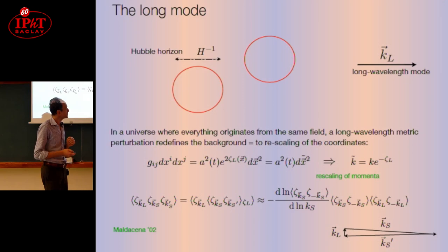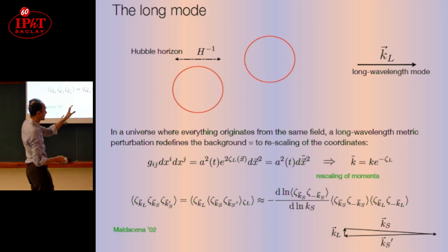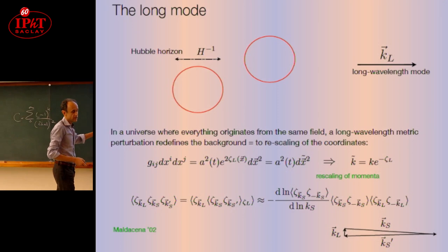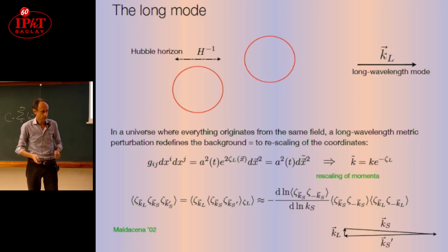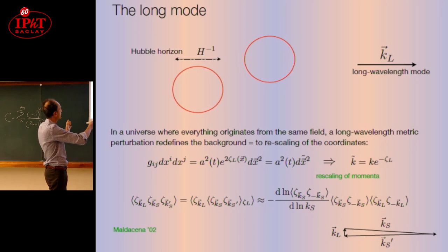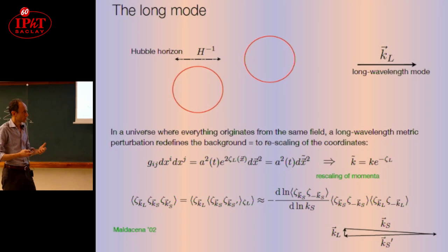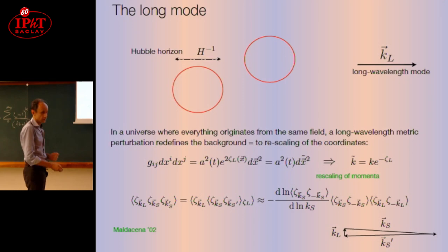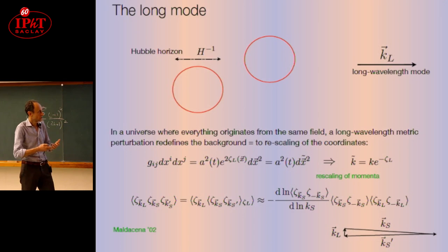Suppose that I take a very long wavelength mode, whose wavelength is much longer than a Hubble patch, which defines the causal patch in the universe during inflation. This wavelength mode is much longer than the horizon patch during inflation. At least locally, since this is very long, I should be able to reabsorb it in a redefinition of the background expansion. In a universe where everything originates from the same field, from a single inflaton, a long wavelength metric perturbation should be absorbed by rescaling of the coordinates. If you go to Fourier space, it's just a rescaling of the momentum.